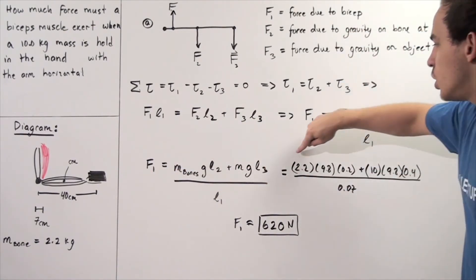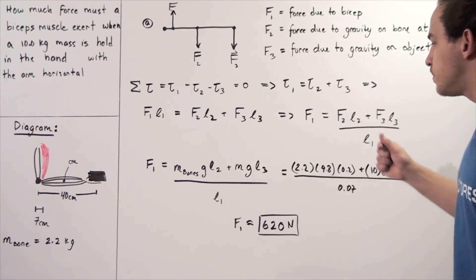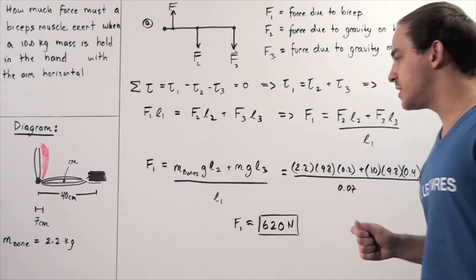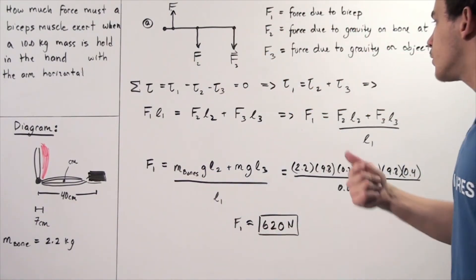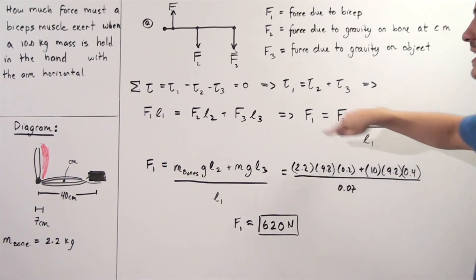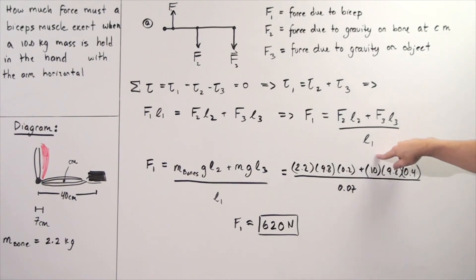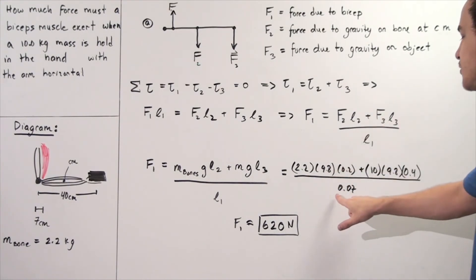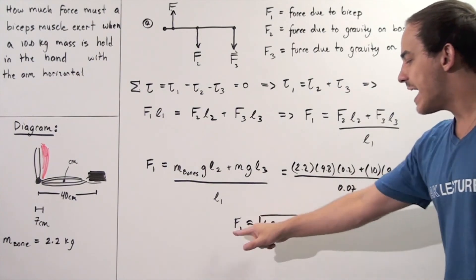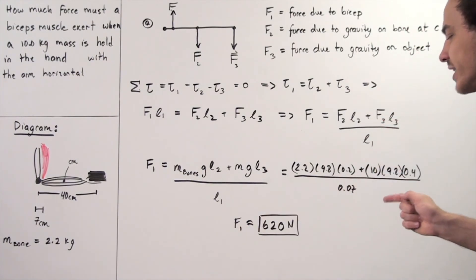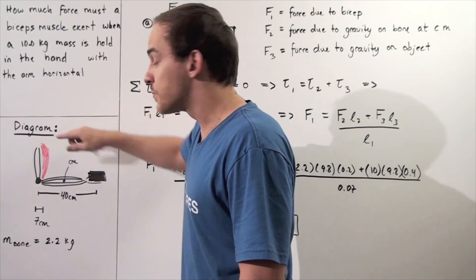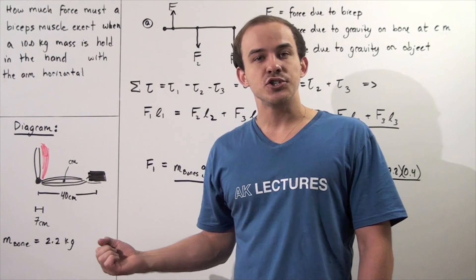Substituting values: force one equals (2.2 kg × 9.8 m/s² × 0.2 m) plus (10 kg × 9.8 m/s² × 0.4 m), all divided by 0.07 meters. This gives approximately F1 equal to 620 newtons. So 620 newtons is the force required by the biceps muscle for the entire arm to be completely stationary and exist in static equilibrium — not rotating and not translating.